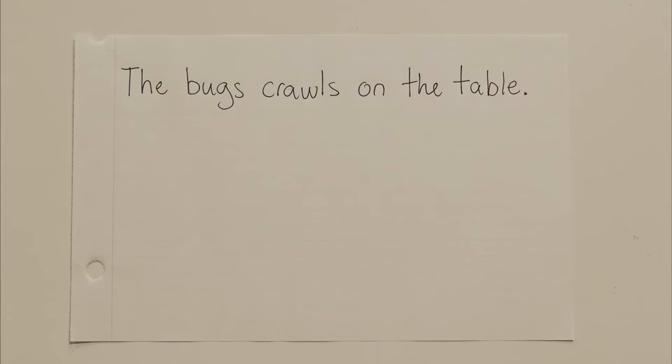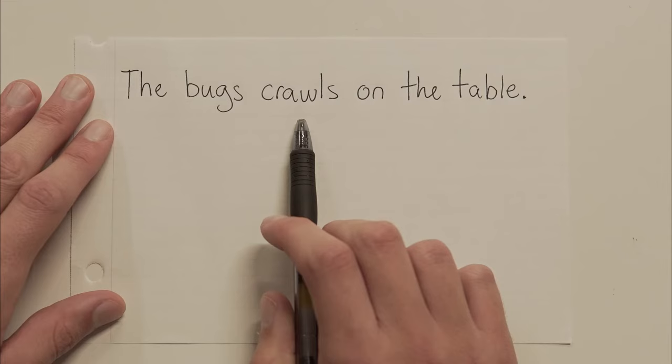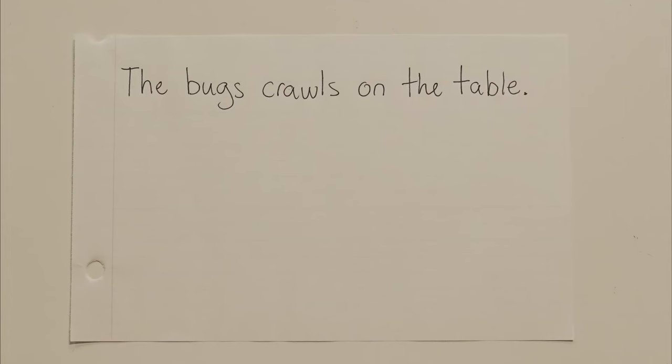Let's look at another one. The bugs crawls on the table. Okay, so what is our subject here? Who or what are we talking about? Bugs, right? Bugs is our subject. And what about our verb? What word tells what the bug is or is doing? Crawls, right? Crawls is the verb. But it doesn't make sense to say the bugs crawls, because crawls is singular. Like one thing crawls, one baby crawls, one soldier crawls. But when you have multiple of something, they don't crawls, they crawl. So you wouldn't say the bugs crawls. You would say the bugs crawl.